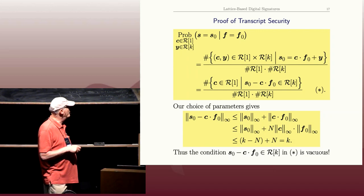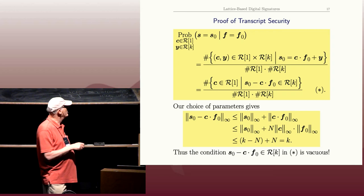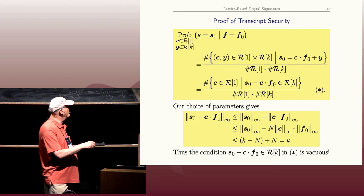So the S naught has coefficient at most K minus N. This has coefficient at most N. So the largest coefficient of this difference is at most K.